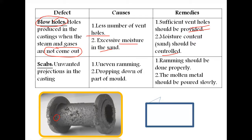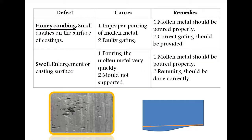Scab refers to unwanted projections in the casting. The reasons behind this are uneven ramming and dropping down of part of the mold. Ramming should be done properly with a rammer, and the molten metal should be poured slowly. If you pour the molten metal too suddenly, it will splash in the mold cavity and cause these types of unwanted projections to form.